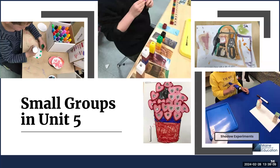In small groups, children will learn and have additional practice with vocabulary and concepts, with opportunities to support and deepen their understanding. Small groups provide hands-on learning experiences. Examples from Unit 5 shown here include kaleidoscopes, tall tall tree, napping house art, fill your puddle pail, and measuring shadows.